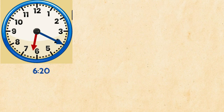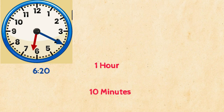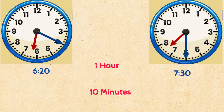Let's have a look at another example. Let's say it's 6:20 in the morning and your mum says that you need to get ready in 1 hour and 10 minutes for school. What time will it be in 1 hour and 10 minutes? We start with the hour hand first and move it ahead 1 hour, so it will be 7:20. Then we move the minute hand ahead 10 minutes, which makes it 30 minutes. So the time will be 7:30.